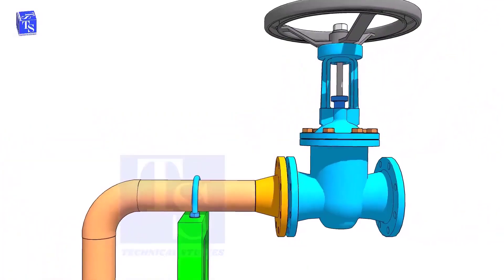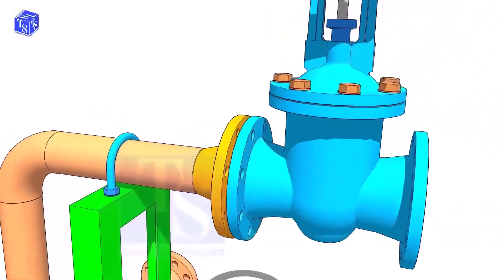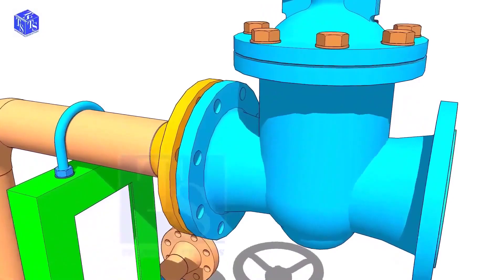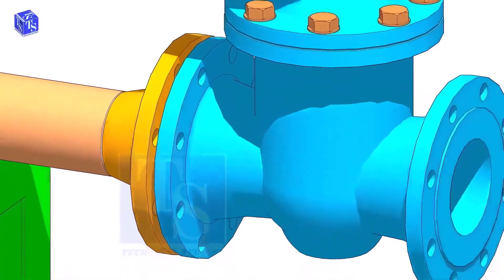Hold the valve near the pipe flange. Put two bolts at the bottom side. Don't bring the valve too close to the pipe flange.